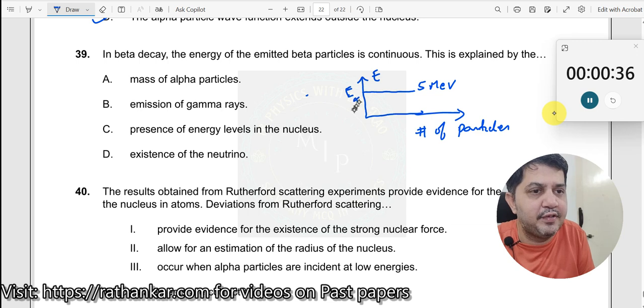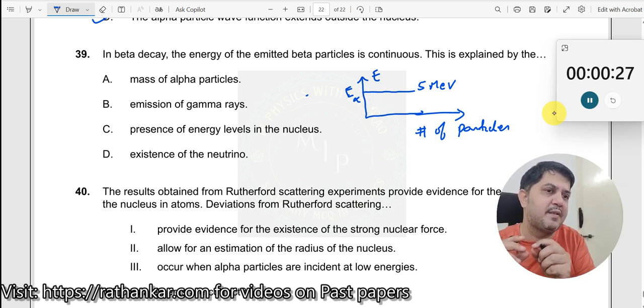But in case of a beta particle, why do we get like this? Because we assume that whatever alpha particle comes out of the nucleus, composition-wise there is no change, and hence the energy should also be the same.